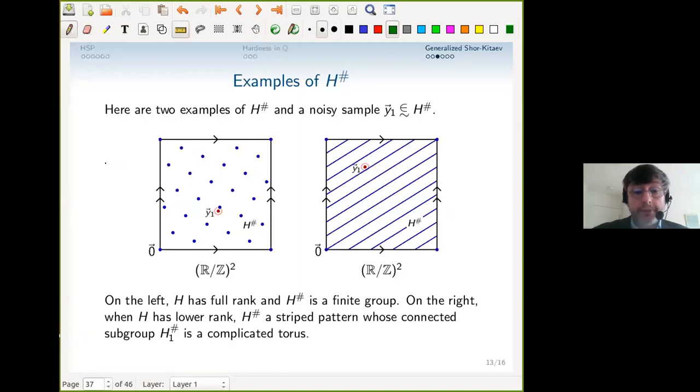Well, that was a lot of abstraction. Here's a picture of two examples of what might happen. We can work in two dimensions. On the left, we have the Shor-Kitaev situation, where since H has finite index, H^♯ is a finite group whose cardinality is the index of H. So H^♯ is a bunch of dots, and we're approximately sampling. The picture is an exaggeration—y_1 can be very close to one of these dots in the group. What's coming is that we can use the continued fraction algorithm to repair the coordinates of y_1. That's in Kitaev's paper and resembles Shor's paper.